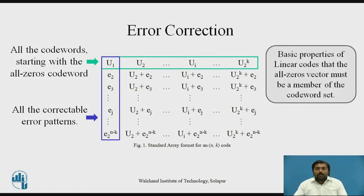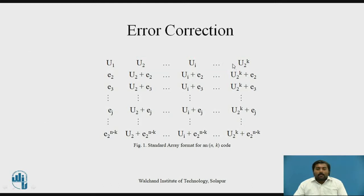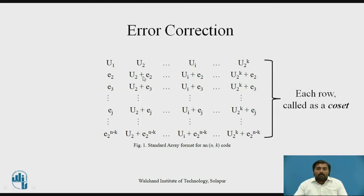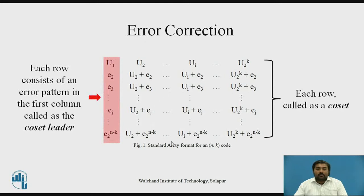From this, we already know the basic property of linear codes: the all-zero codeword must be a member of the codeword set. Here, the first row is the codeword set and the all-zero codeword is a member of this set. All rows in this standard array are called cosets, and the first element of each row — that is, the first column — contains elements called coset leaders.